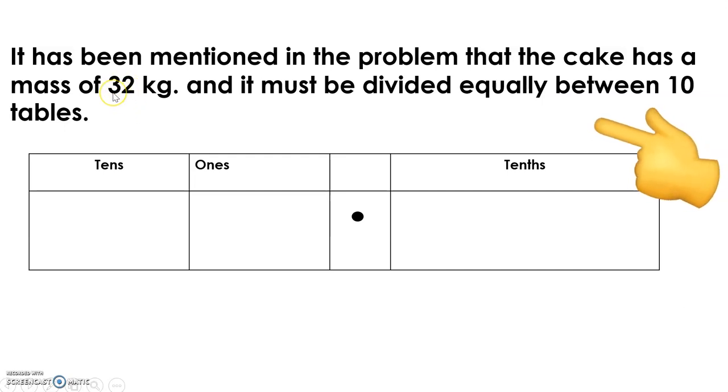Looking at the place value grid again, we will have to place counters depending on the number of tens and ones. So we will have to place one tens, two tens, and three tens.